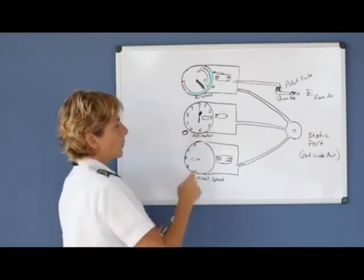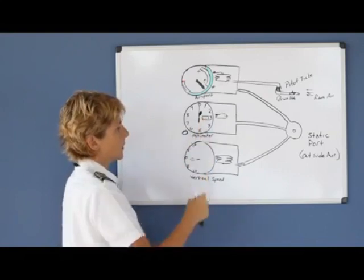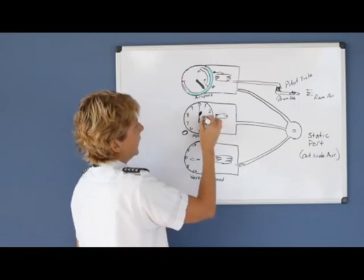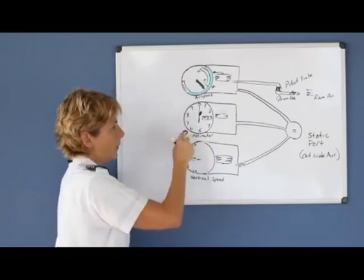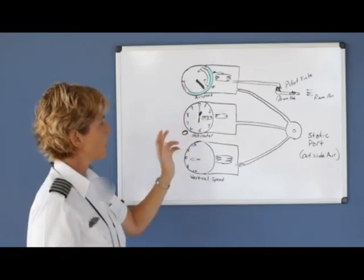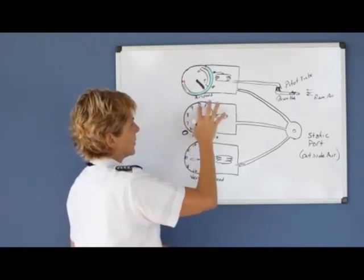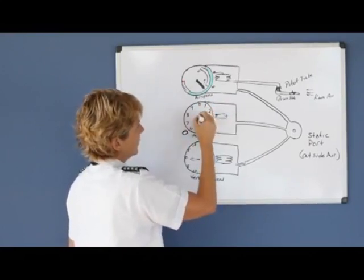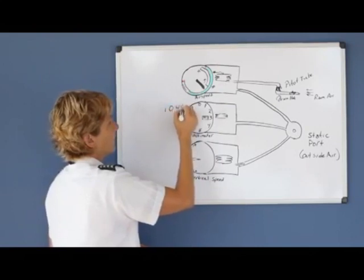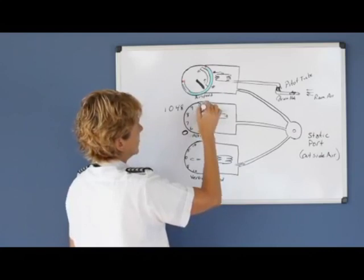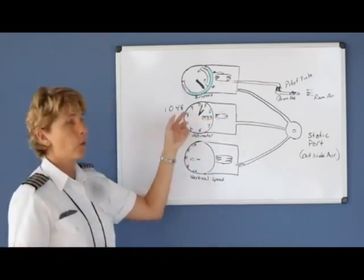The next thing is the Kollsman window. The Kollsman window is where we place the current altimeter setting. For example, if you listen to the ASOS on the field and it said that the altimeter was 3012, then you use the little knob to adjust and put that altimeter setting in there. What you're actually doing is setting the needles so they read in relation to mean sea level. In this example, the airport field elevation is 1,048 feet, so the one needle would be on the 1,000, and then the taller skinny needle would be on about 48 feet.